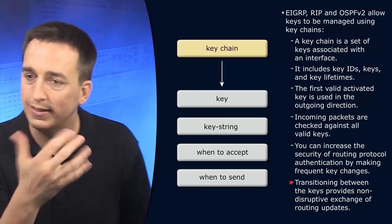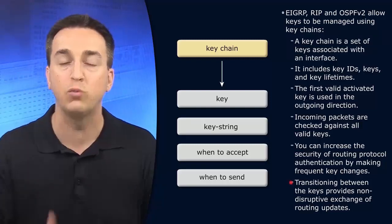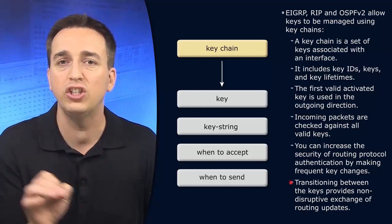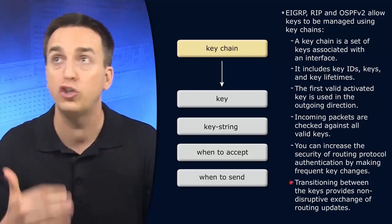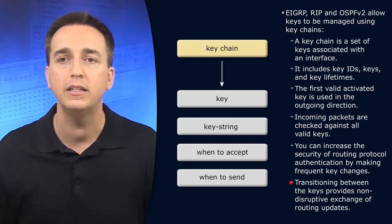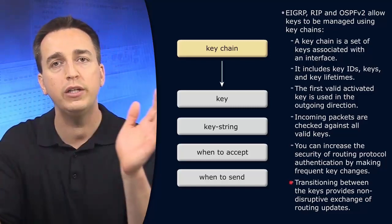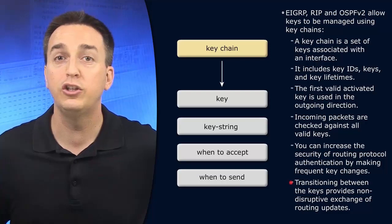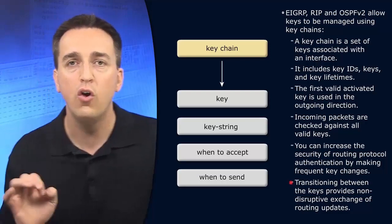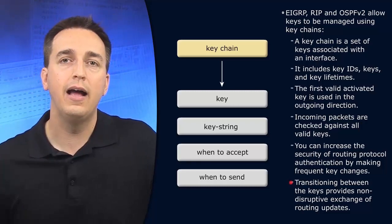You might be thinking: how does that affect our neighborships or routing updates? Well, if you do it properly, the transition should be seamless between these keys. It shouldn't affect neighborships, it shouldn't affect routing updates — the transition should just happen nice and smoothly. We shouldn't see any change in the environment when that change of keys happens.